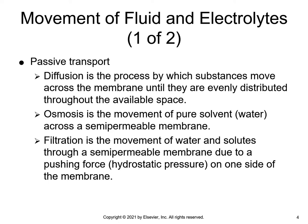A semipermeable membrane is a membrane that allows some substances to pass through, but prevents the passage of other substances. Fluid moves between the interstitial and intracellular compartments and between the interstitial and intravascular compartments by osmosis. Filtration is the movement of water and solutes through a semipermeable membrane, as a result of a pushing force on one side of the membrane. Filtration occurs in the kidney where waste substances and excess water are eliminated.